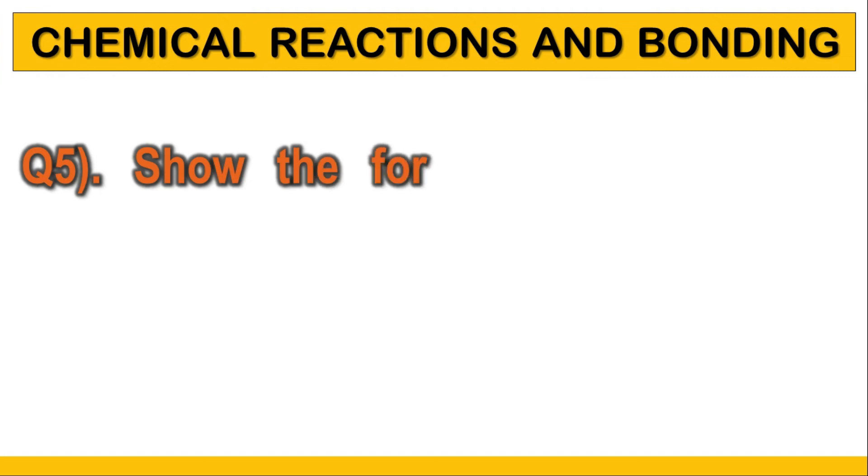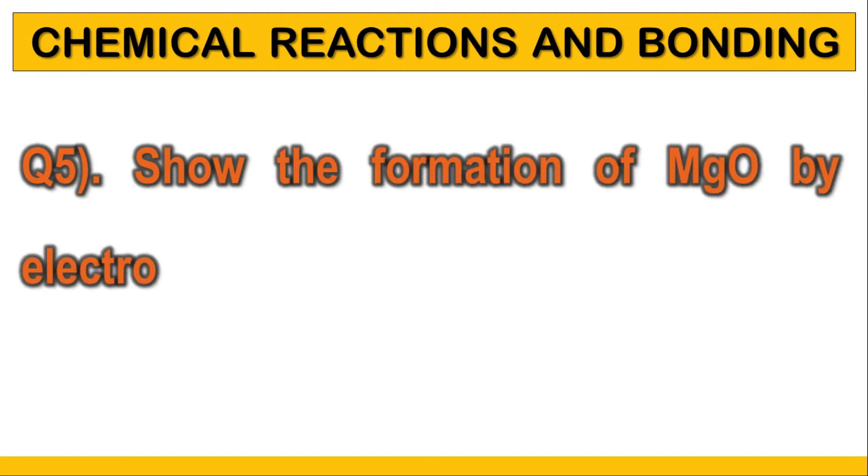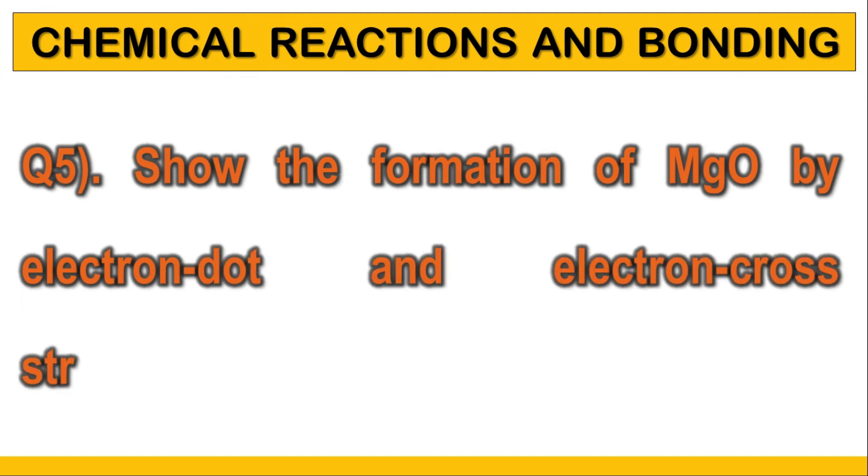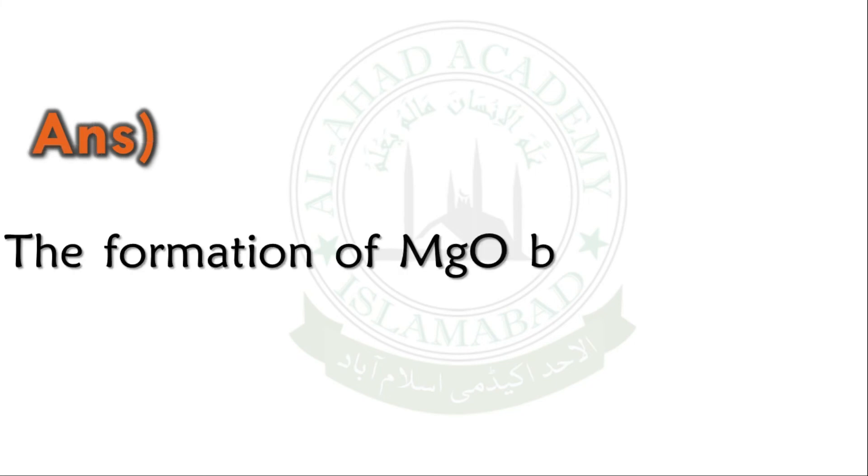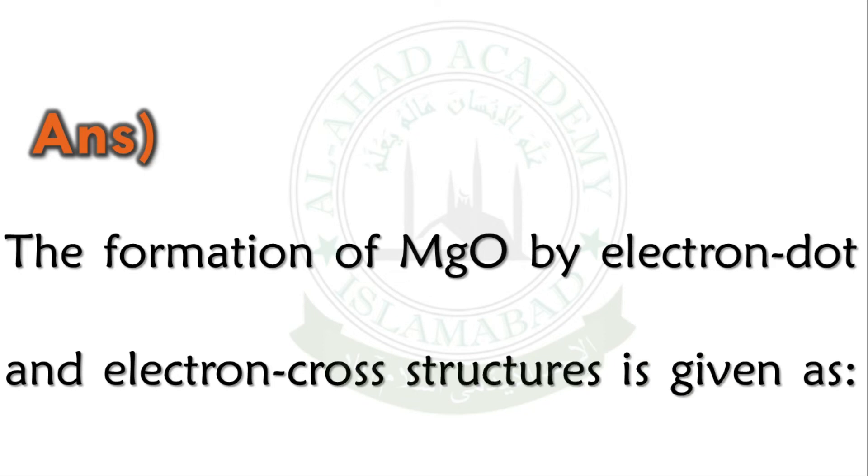Question number 5: Show the formation of MgO by electron dot and electron cross structures. Atomic number of magnesium is 12 and oxygen is 8.